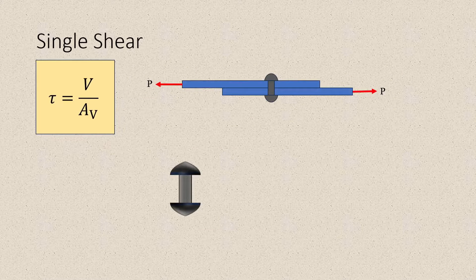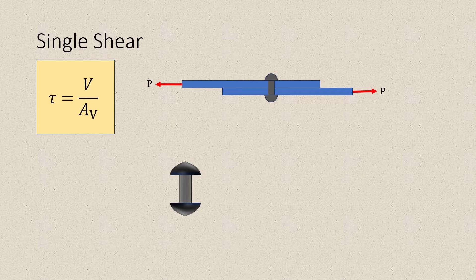First, I will discuss what single shear is. Single shear occurs when the applied force or load acts on a single plane within the material, causing it to deform or fail along that plane. This means the force is applied in a direction parallel to only one surface or plane of the material. For example, if you push or pull on one end of a rod or beam so that it bends or deforms along a single plane, you're subjecting it to single shear.